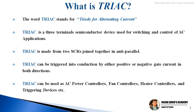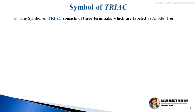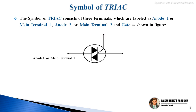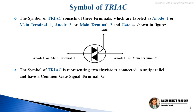Now let's discuss the symbol of TRIAC. The symbol of TRIAC consists of three terminals which are labeled as Anode 1 or Main Terminal 1, Anode 2 or Main Terminal 2, and Gate, as shown in the figure on screen.